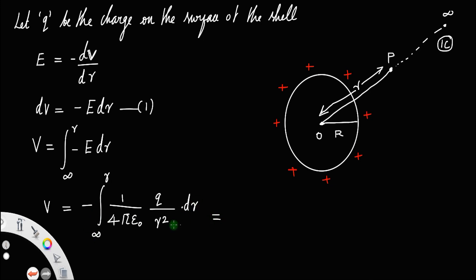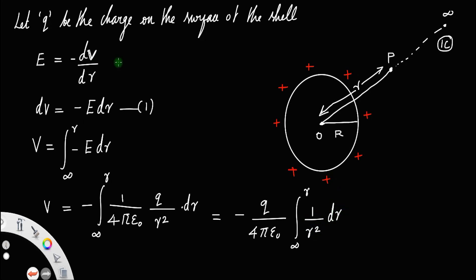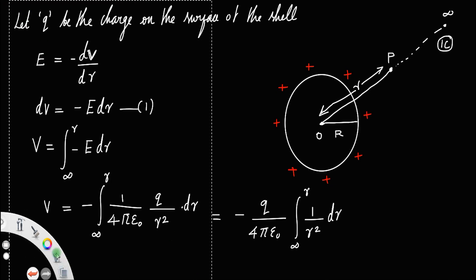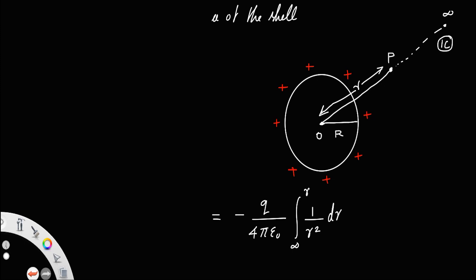Now you have to integrate this. You can take 1 by 4π epsilon-0 and q, since they are constants, outside the integral. So we have minus q divided by 4π epsilon-0, integral from infinity to r of 1 by r squared dR. Now the potential V will be: V is equal to minus q divided by 4π epsilon-0, integral from infinity to r, r raised to minus 2 dR.